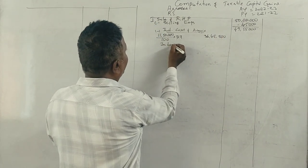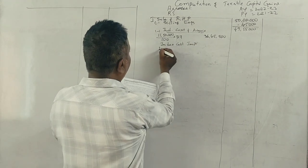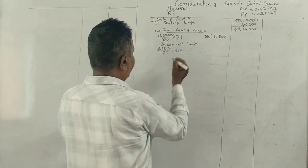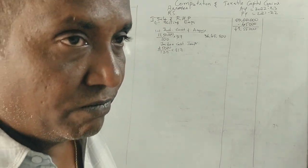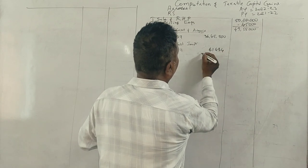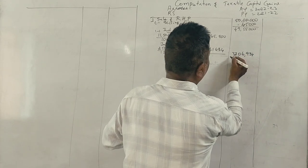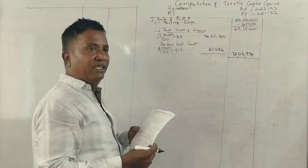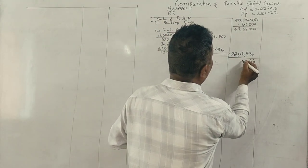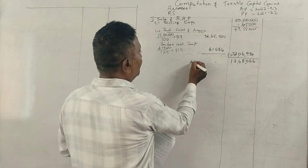Index cost of improvement. Improvement is 25,000 divided by 129 multiplied by 317, giving 61,434. You have to compute the total: 37,06,934. Minus this from sale proceeds: 12,48,066 is the capital gain.